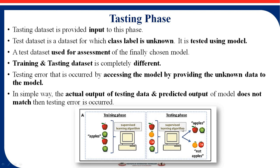Testing error occurs by accessing the model and providing unknown data to it. If you provide data other than apple images to the machine, it won't recognize it. In simple terms, if the actual output of testing data and predicted output of the model do not match, then a testing error has occurred. If you provide apple and the machine is trained with apple, it generates the proper result; otherwise it generates the wrong result. This is the concept of training and testing dataset.